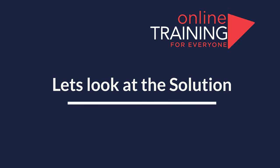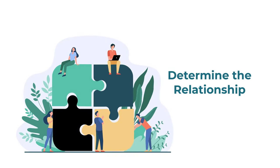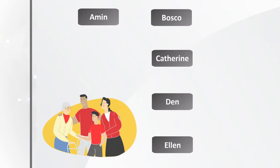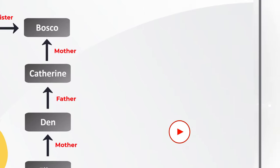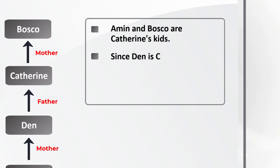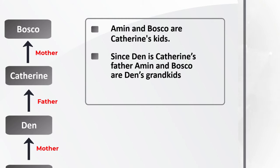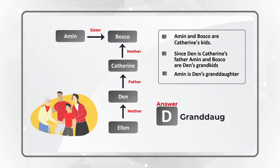Ready or not, I am going to move forward and reveal the answer. The easiest way to determine this multigenerational relationship is to build a diagram. Amin is Baska's sister. Catherine is Baska's mother. Dan is Catherine's father. Alan is Dan's mother. Now the conclusions: Amin and Baska are Catherine's children. Since Dan is Catherine's father, Amin and Baska are Dan's grandkids. Which means that Amin is Dan's granddaughter.